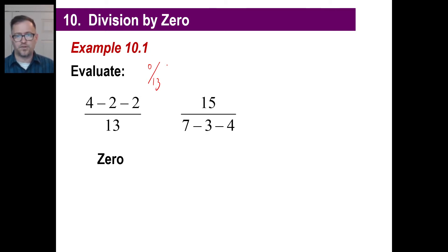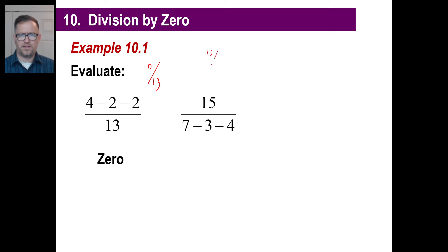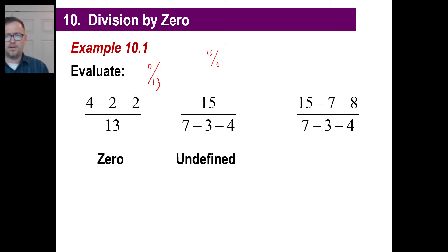Okay, let's say something like this. If you have 15 divided by 7 minus 3 minus 4, what's the denominator turn out to be? Zero, right? This is weird. 15 divided by zero — but how many zeros fit into 15? Well, we call that undefined.